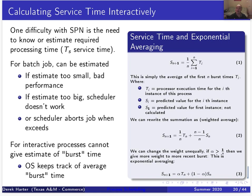If you keep an average — for every process that's running, track the execution burst time each time it was scheduled — and then average those together, that gives you a pretty good estimate of what the next burst time is likely to be.